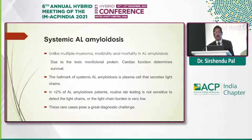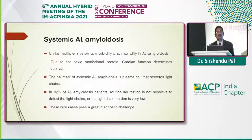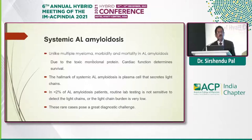Coming to systemic AL amyloidosis: unlike multiple myeloma, death in amyloidosis is due to toxic monoclonal proteins deposited in vital organs, and cardiac function determines survival. The hallmark is plasma cells that secrete light chains. In less than two percent of AL amyloidosis patients, routine lab testing may not be sensitive enough to detect the light chains, or the light chain burden may be low, and these rare cases pose a significant diagnostic challenge.